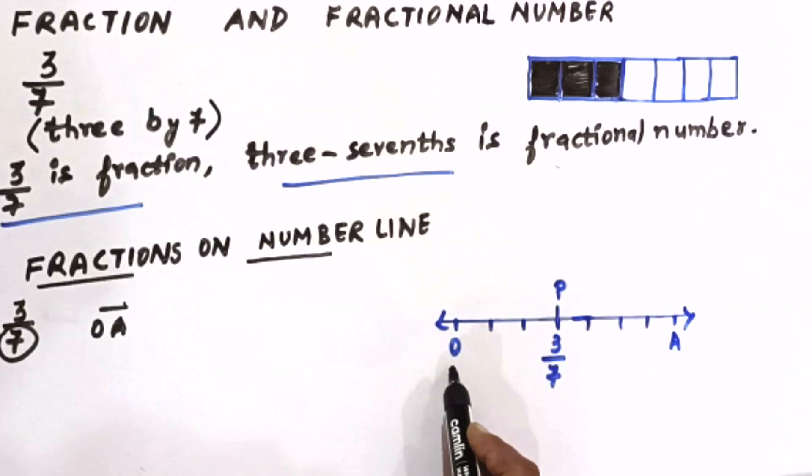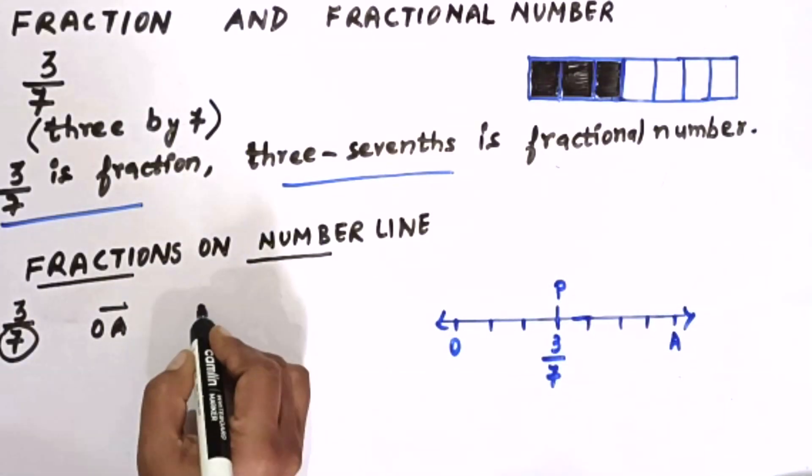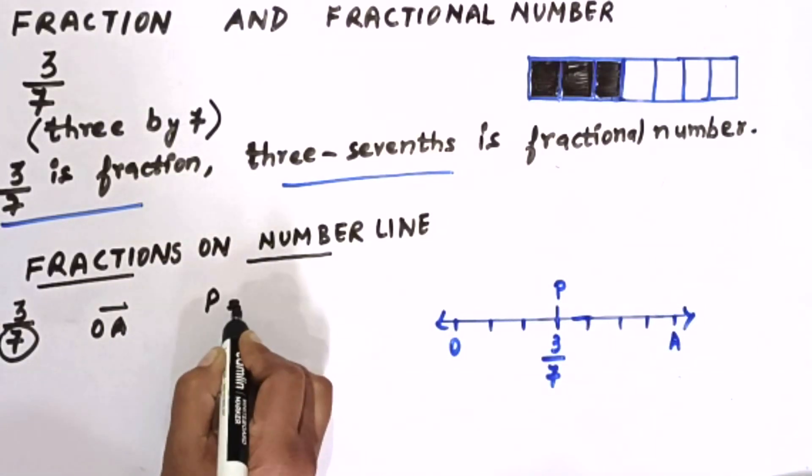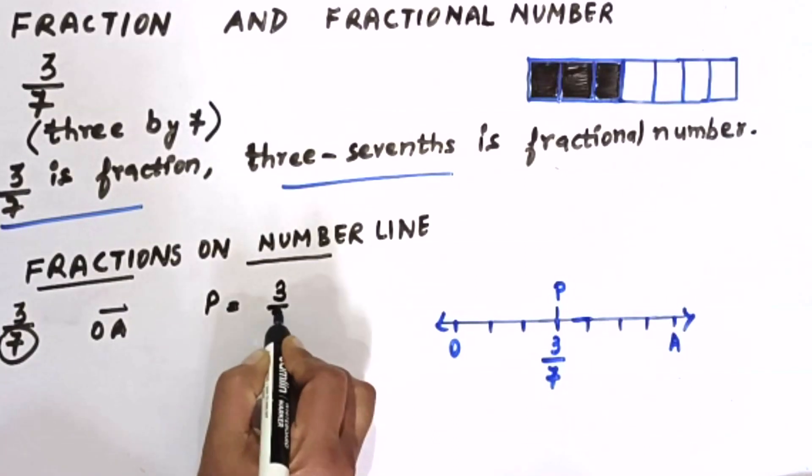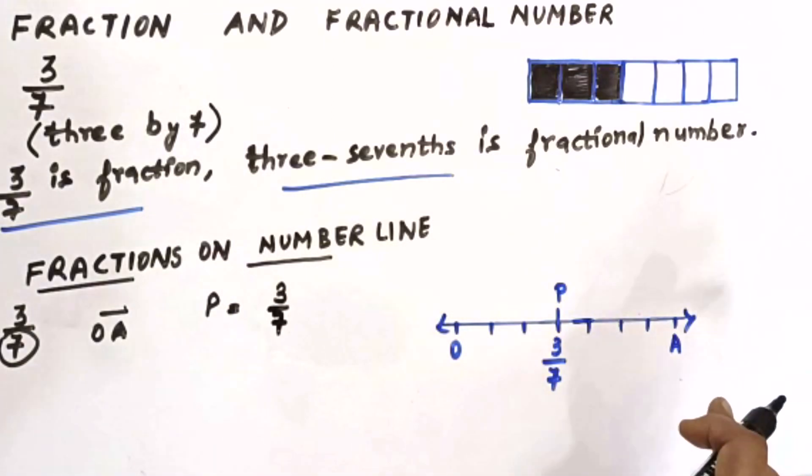And starting from point zero, we will count till the third part. The third part will be denoted by point P.